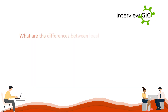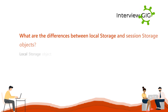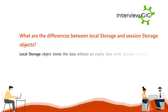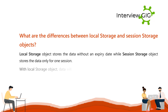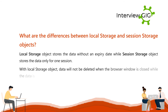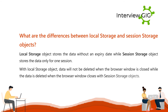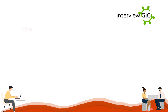What are the differences between local storage and session storage objects? The local storage object stores data without an expiry date, while the session storage object stores data only for one session. With local storage, data will not be deleted when the browser window is closed, while data is deleted when the browser window closes with session storage.